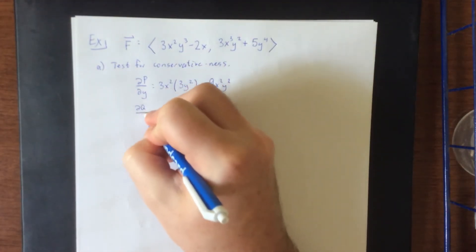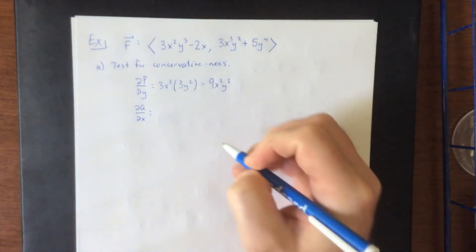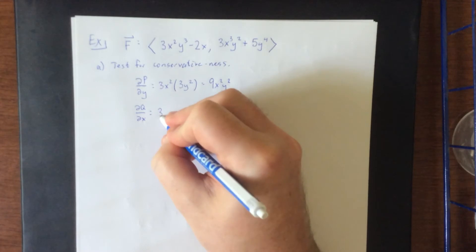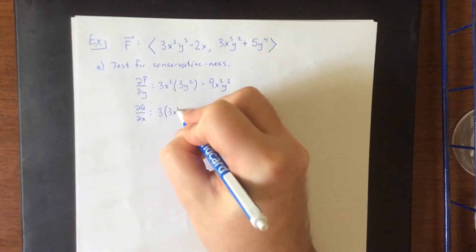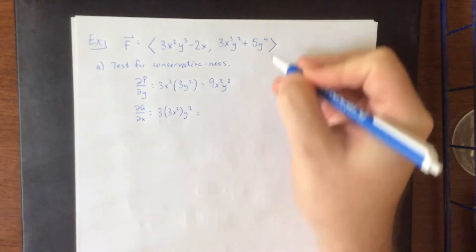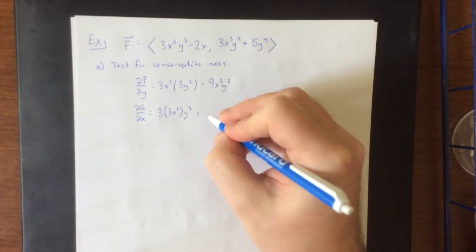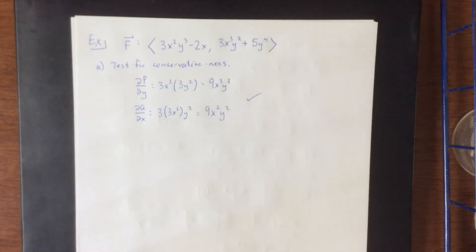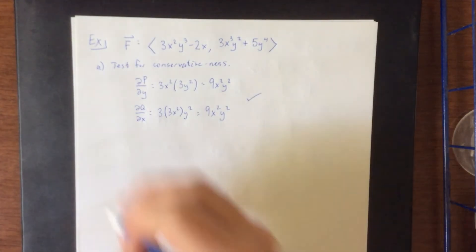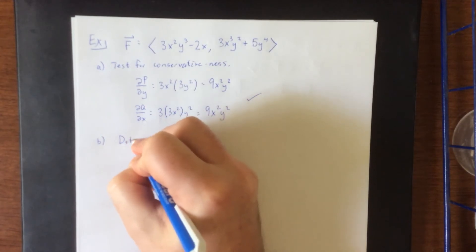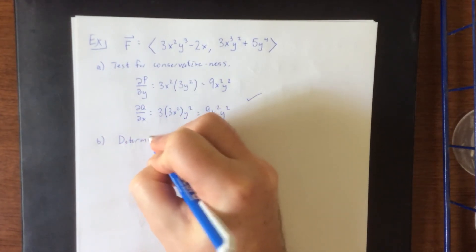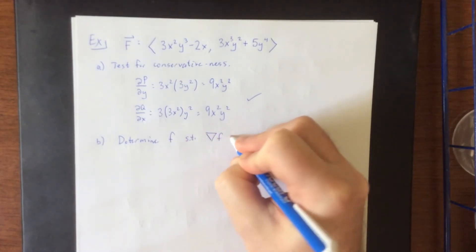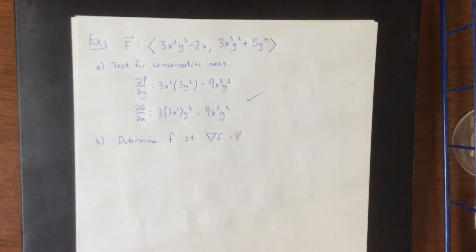For the partial derivative of q with respect to x, we'll see something similar — treating y as a constant and x as our variable. This gives 3 times 3x² times y², and the derivative of the constant 5y⁴ term is 0. So once again we get 9x²y². Therefore, we have ourselves a conservative vector field. Next, we'll determine the generating function or potential function — find f such that the gradient of f equals the vector field F.